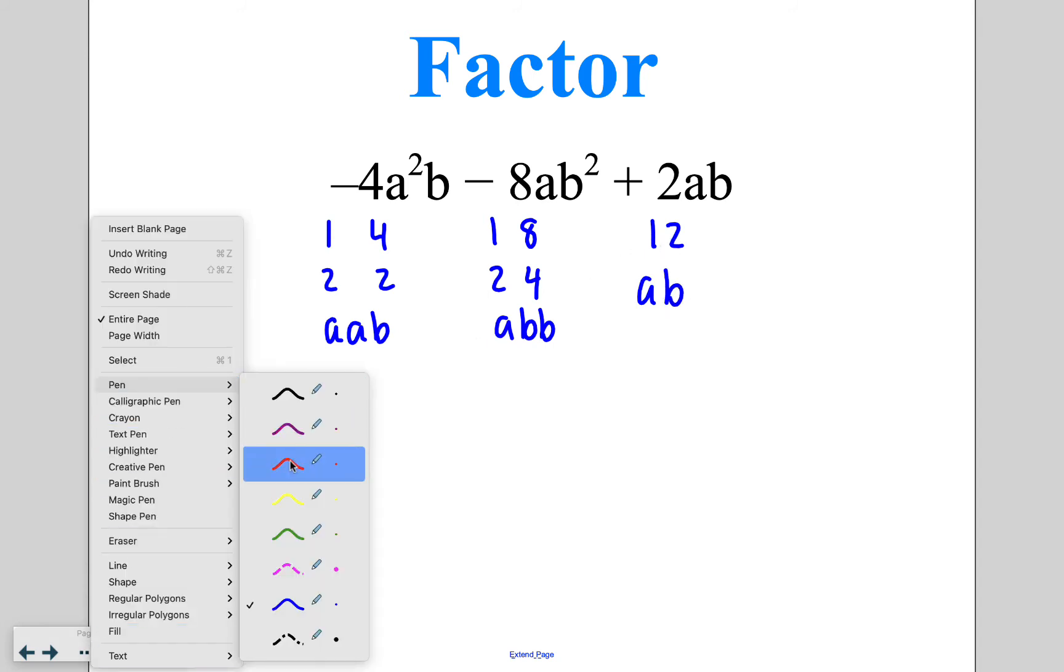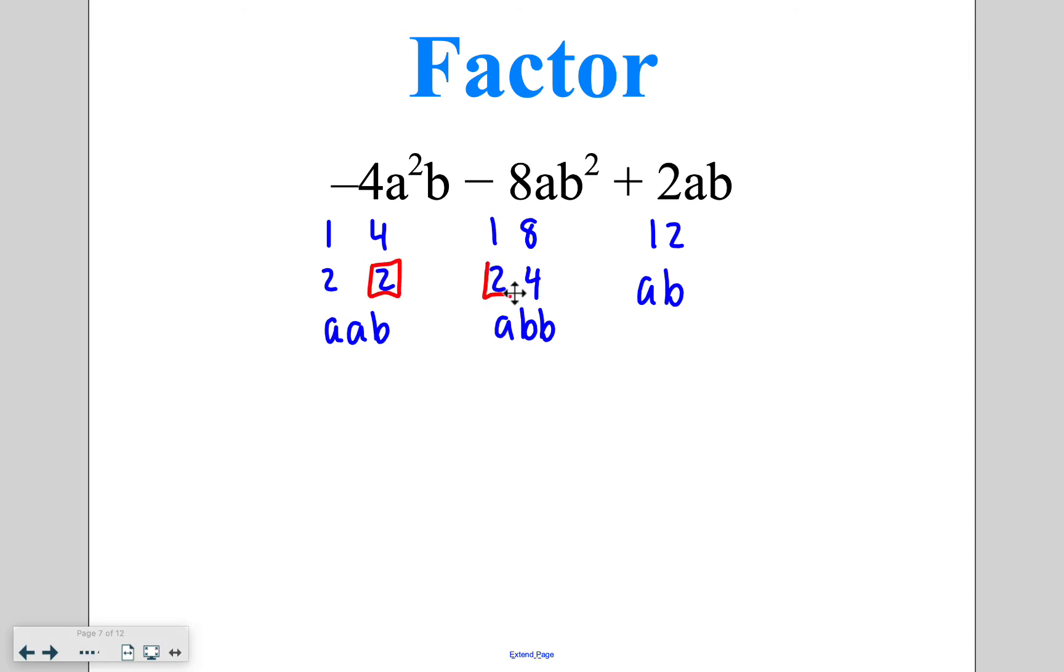When I pull out my GCF this time, the largest number that divides everything is 2, and then also an A and a B from each pair. So I've got 2AB as my greatest common factor. Then my leftovers: numerical factor of 2, variable of A from the first part, and that negative is still left over. So negative 2A. I'm going to subtract 4 and a B left over, and then I'm adding on a factor of 1 left over with no variables. So I have 2AB times the quantity of negative 2A minus 4B plus 1.